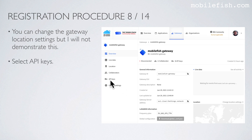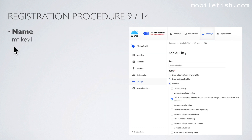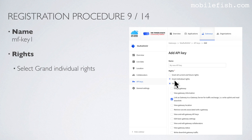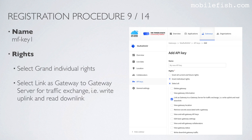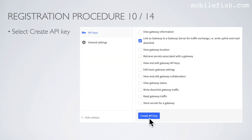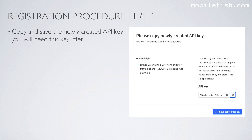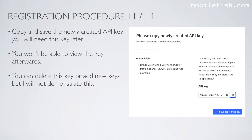Now select API Keys. Enter a name — I have entered this name. Select Grant Individual Rights, and then select Link as Gateway to Gateway Server for traffic exchange, i.e. write uplink and read downlink. Scroll down and select Create API Key. Now copy and save the newly created API key — you will need this key later. Press the copy button. You won't be able to view the key afterwards. After you copy the key, select I have copied the key.